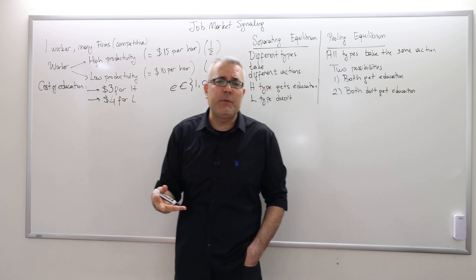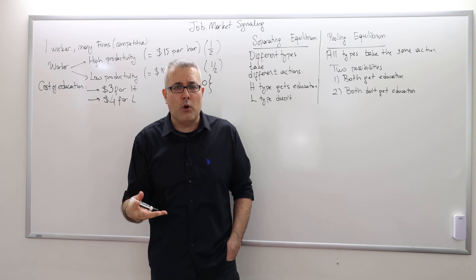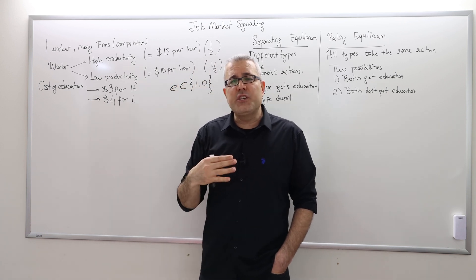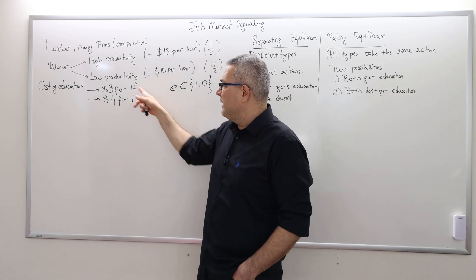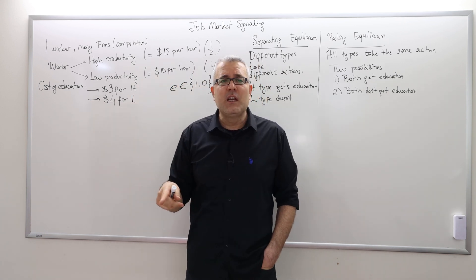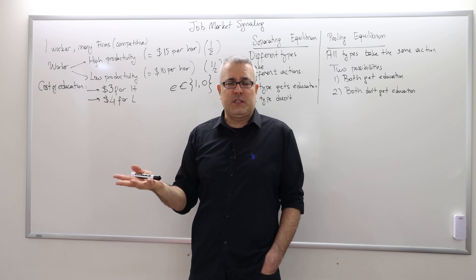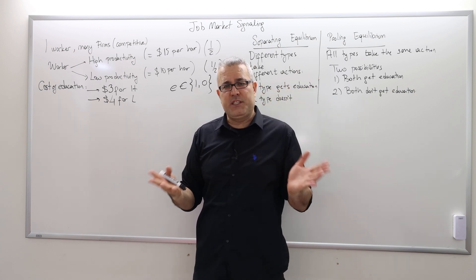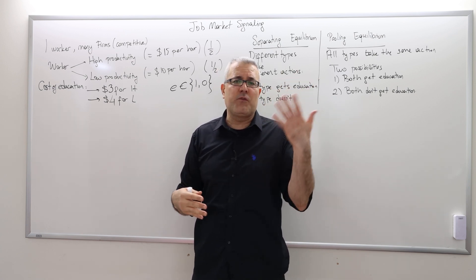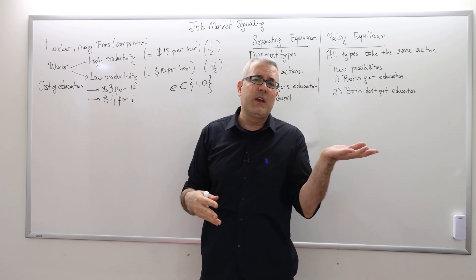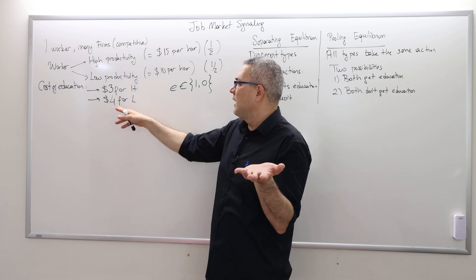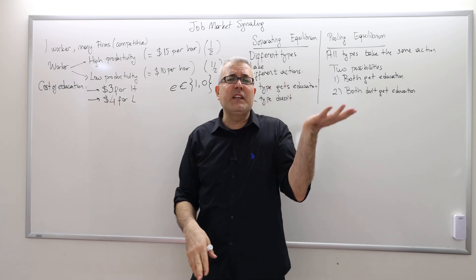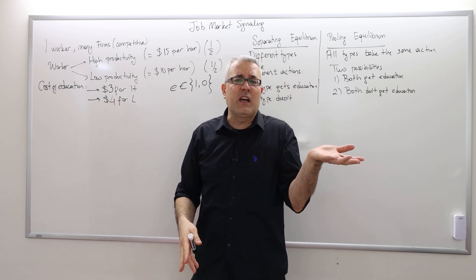It's $4 versus $3 — $4 for the low type and $3 for the high type. So the low type is going to suffer more. But the education here isn't too costly to distinguish these two types.